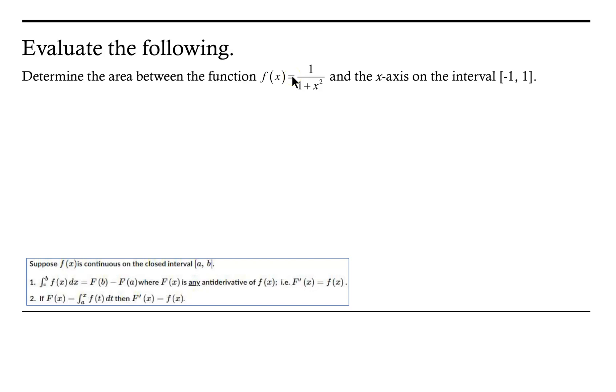So, we do that by integrating from negative 1 to 1, the function 1 over 1 plus x squared dx.